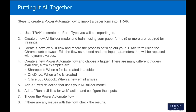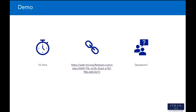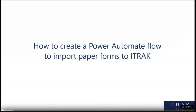Step five: add a predict action using your AI Builder model to recognize data from the form. Then add the UI flow for web action, which handles inputting the data into the iTrack form. Once set up, you trigger the flow and fire it off. There's also a powerful interface to view all steps, inputs, and outputs for each action in the flow in case you need to troubleshoot. We'll now show a demo of the full process to set all of this up and import a paper form into iTrack.